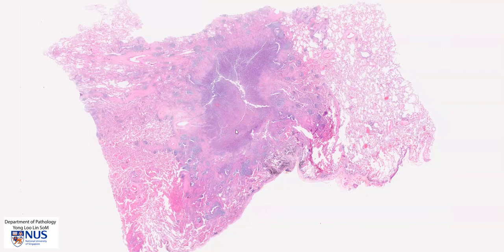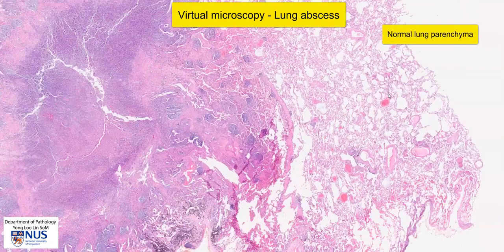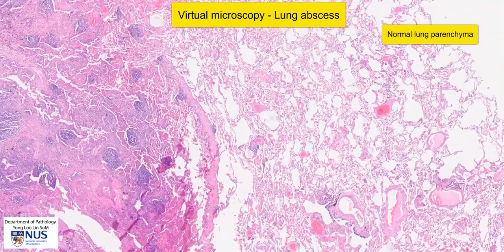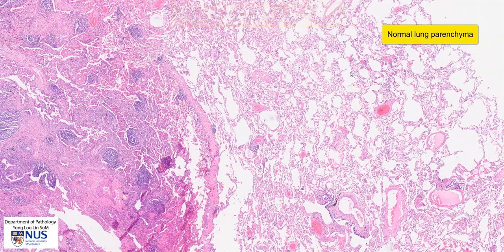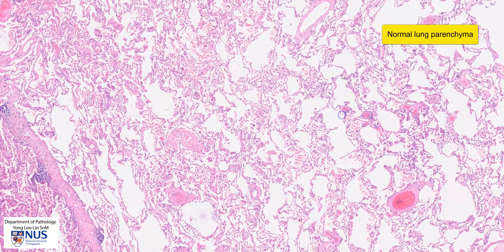This is a virtual microscopy slide of the lung showing a lung abscess. On the right, we have the relatively normal lung parenchyma, which tends to have this spongy appearance because of the air spaces. We can see that the alveolar septae are very, very thin.